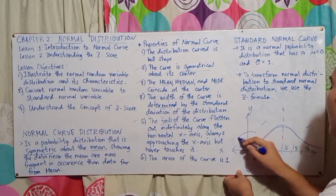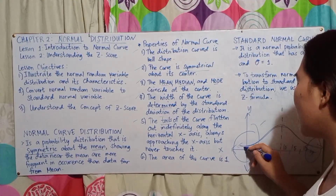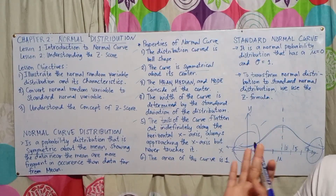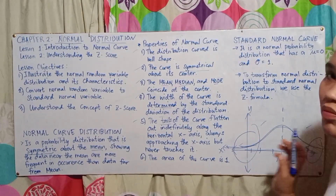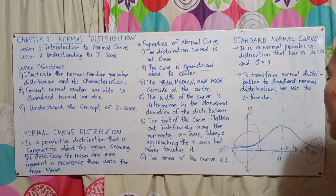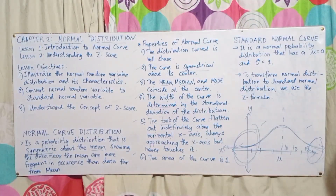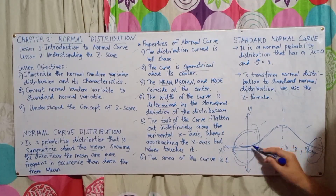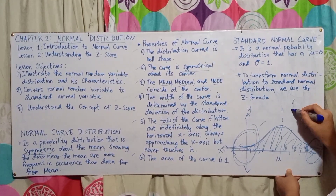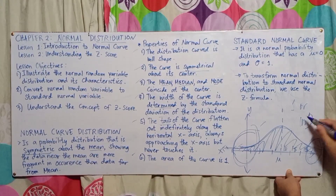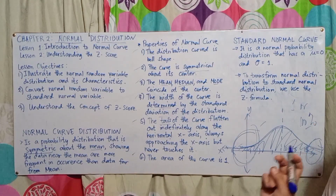The tails approach the x-axis and flatten out indefinitely from both the left and right, but they never actually touch the x-axis. Sixth, the area under the curve is one, meaning the total probability under the curve is one or 100%.